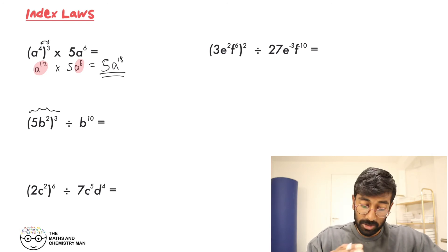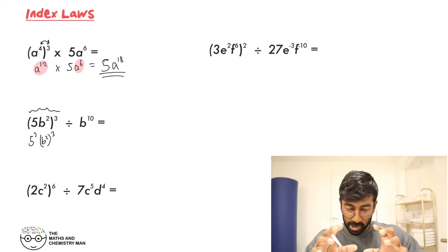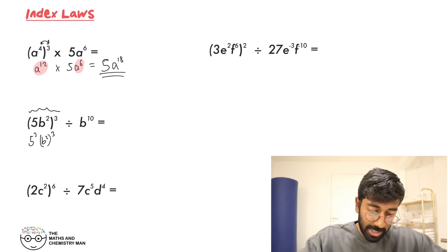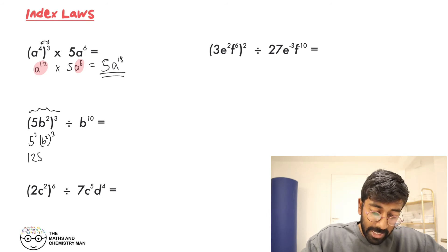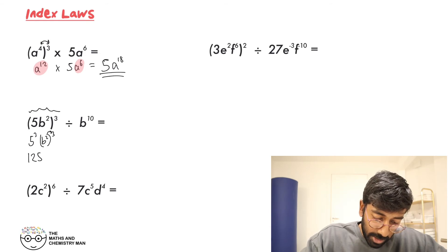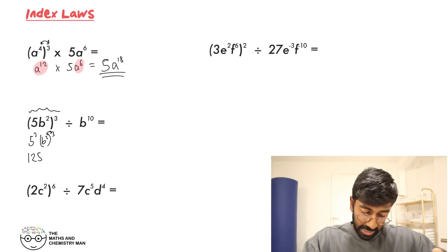Next one down — split this up into each individual part. We've got 5 to the power of 3 and then B squared all to the power of 3. Work out each bit individually: 5 to the power of 3 is 125.